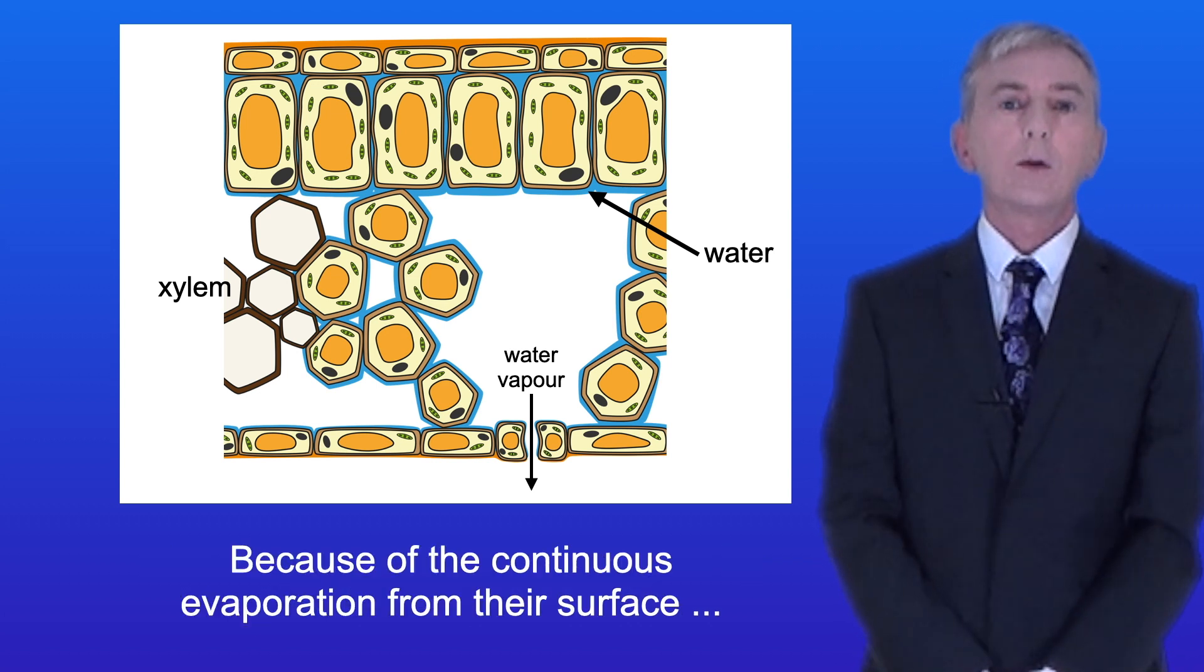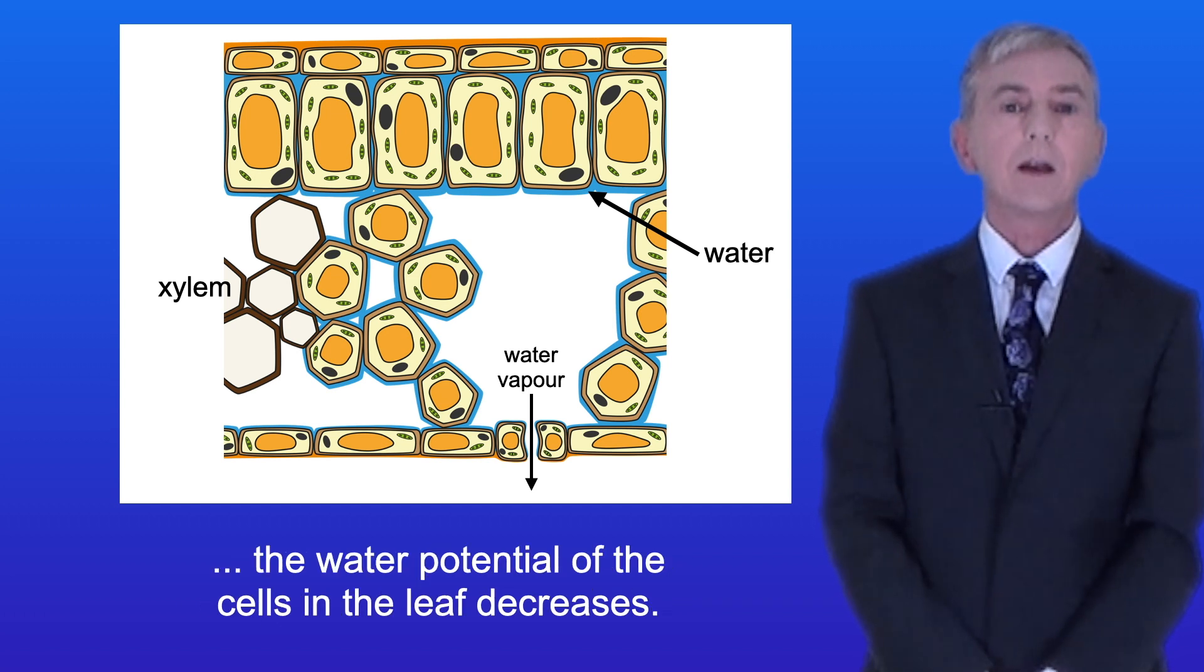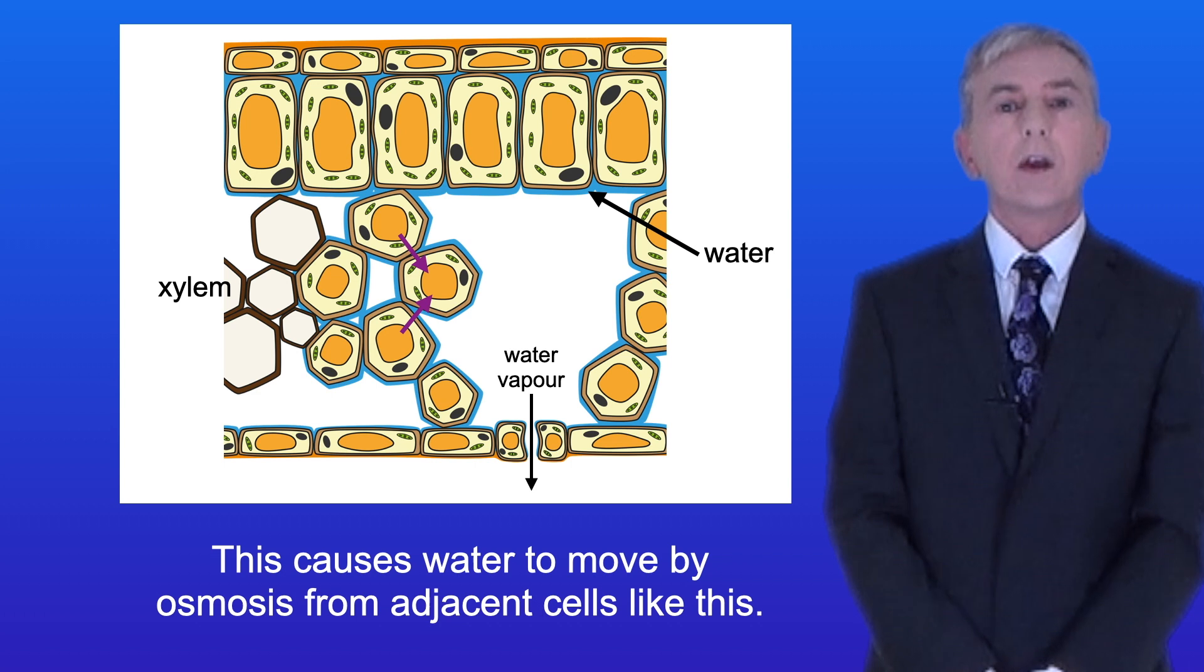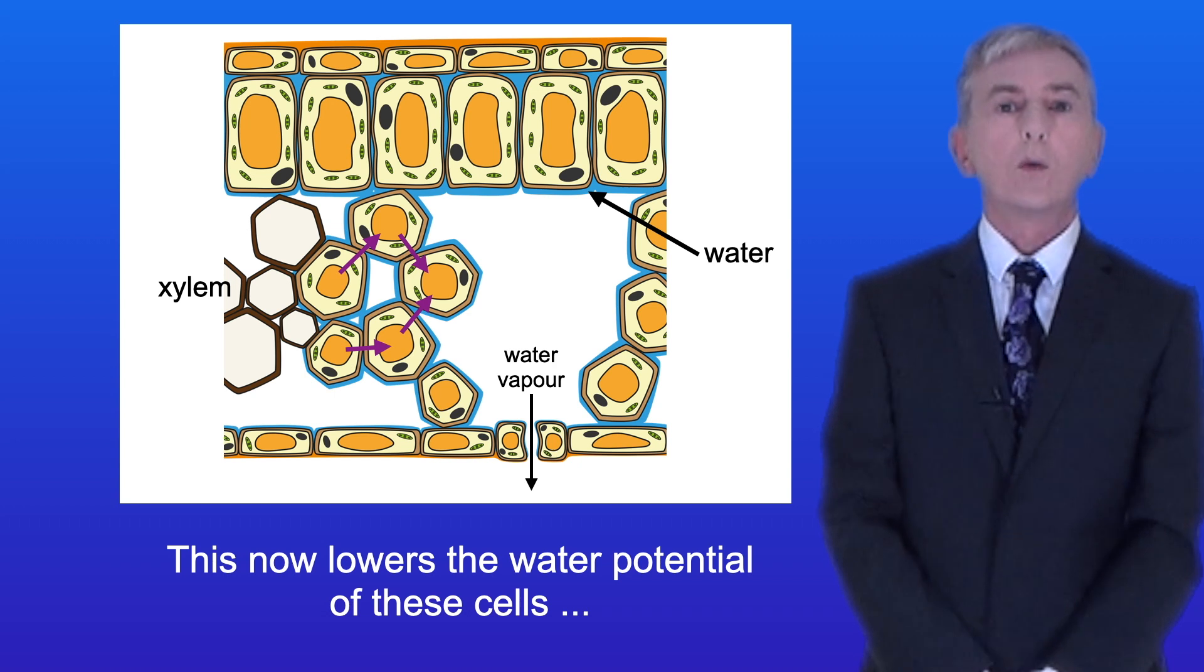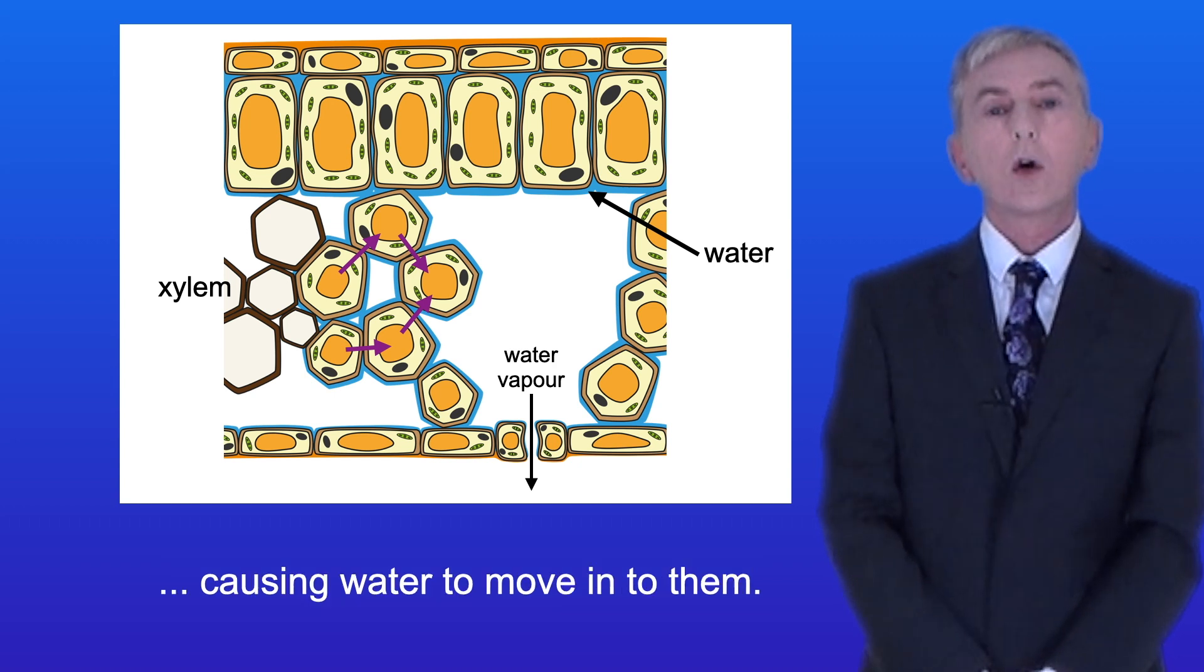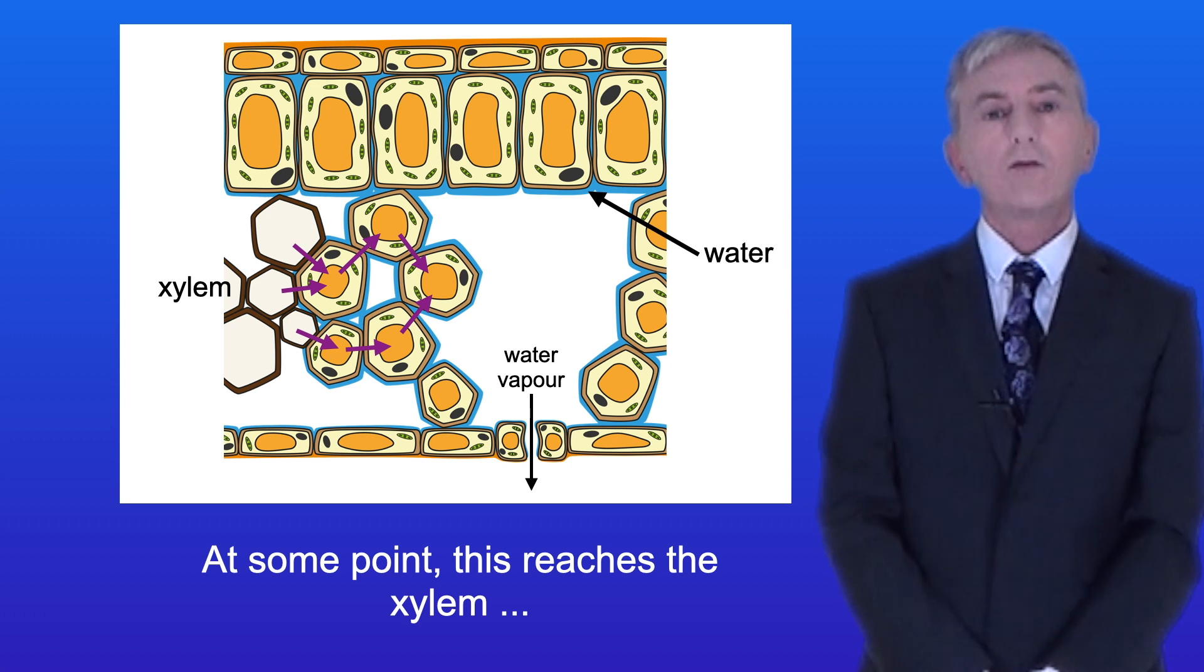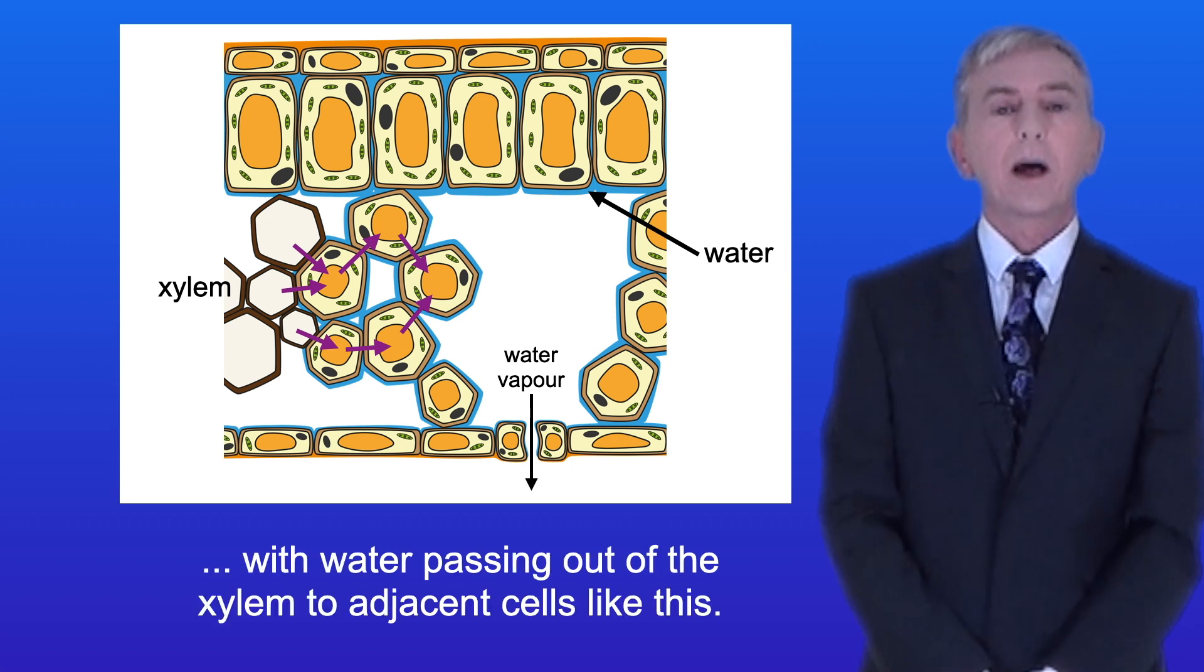Now because of the continuous evaporation from their surface, the water potential of the cells in the leaf decreases. This causes water to move by osmosis from adjacent cells. This now lowers the water potential of these cells causing water to move into them. At some point this reaches the xylem with water passing out of the xylem to adjacent cells.